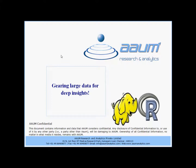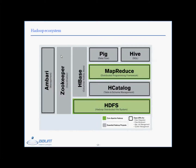Hadoop makes it possible to run applications on systems with thousands of nodes involving thousands of terabytes. This is the Hadoop ecosystem. Pig and Hive allow you to run applications using high-level interfaces such as SQL. HBase is a columnar storage database on top of the file system.